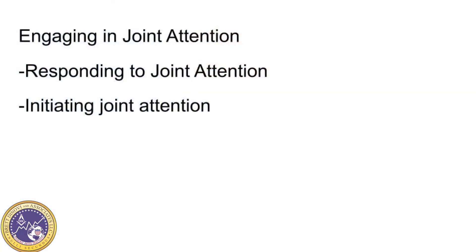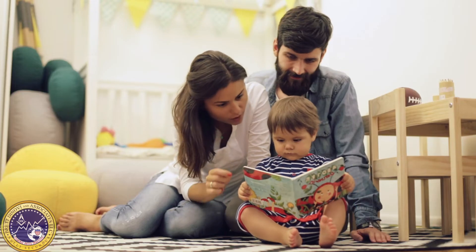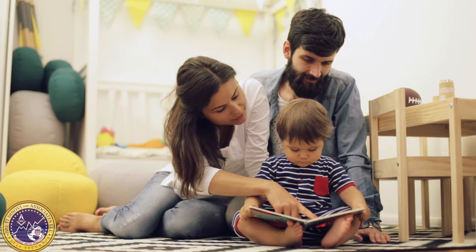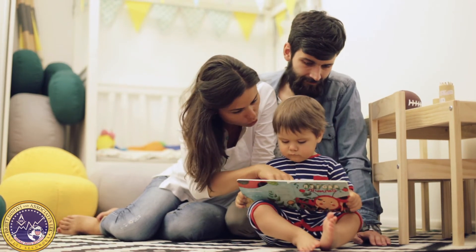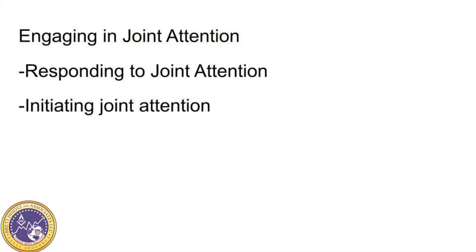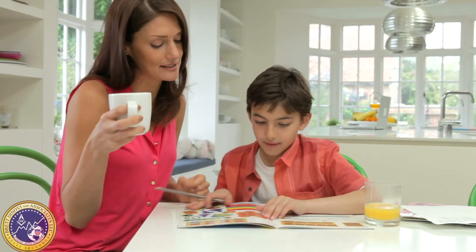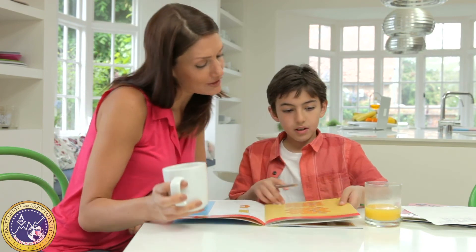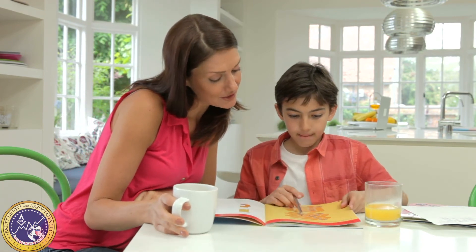There are two ways an individual can engage in joint attention. One is responding to another person's bid for joint attention. For example, an adult points to a picture in a book and says 'look,' and the child responds by following the parent's point or gaze and looks at the picture. The second is initiating joint attention — an example would be a child looking at a book, pointing to a picture, looking towards an adult, and saying 'hey look' to get the adult to look too.